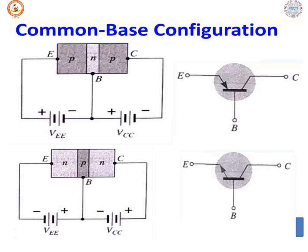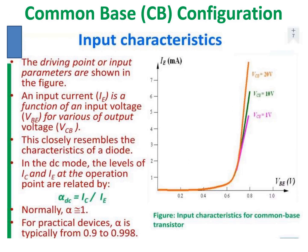This is the connection circuit of the common base configuration for both NPN and PNP transistors. Make sure that whenever you connect a transistor, the emitter-base junction is forward biased and the collector-base junction is reverse biased. To analyze any transistor configuration, we observe two main important characteristics: input characteristics and output characteristics.